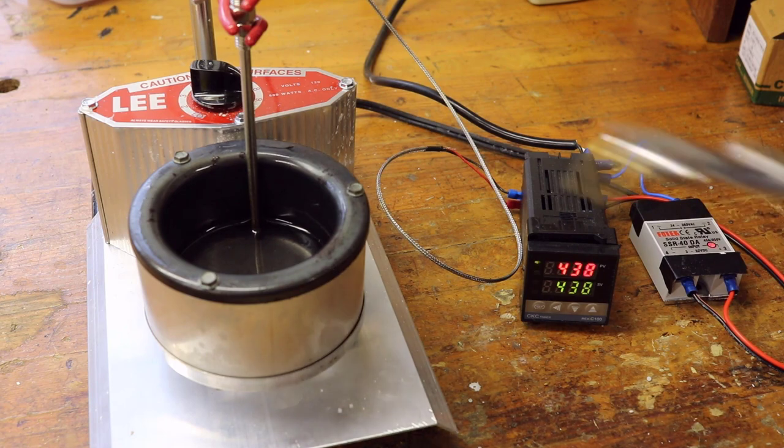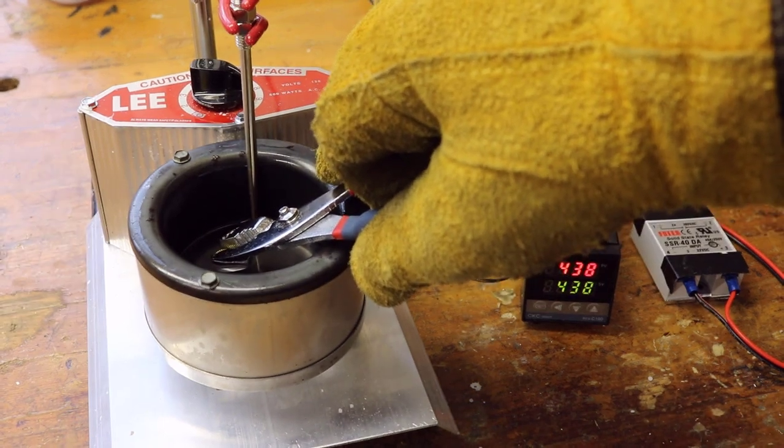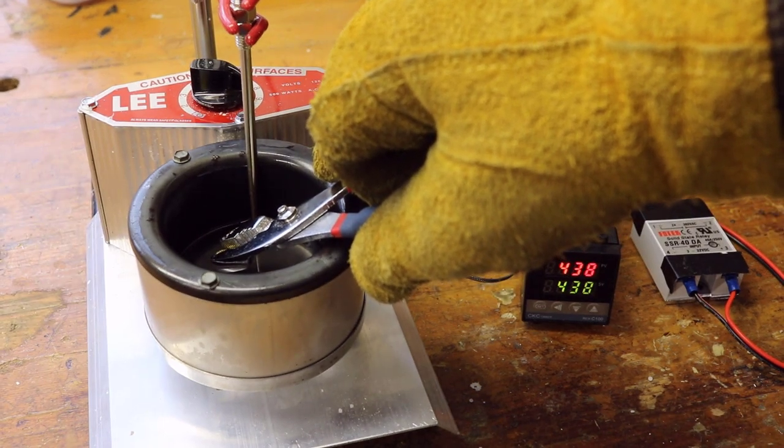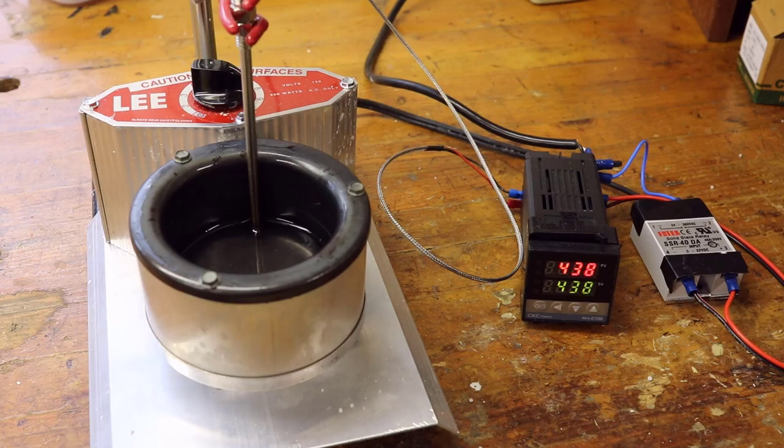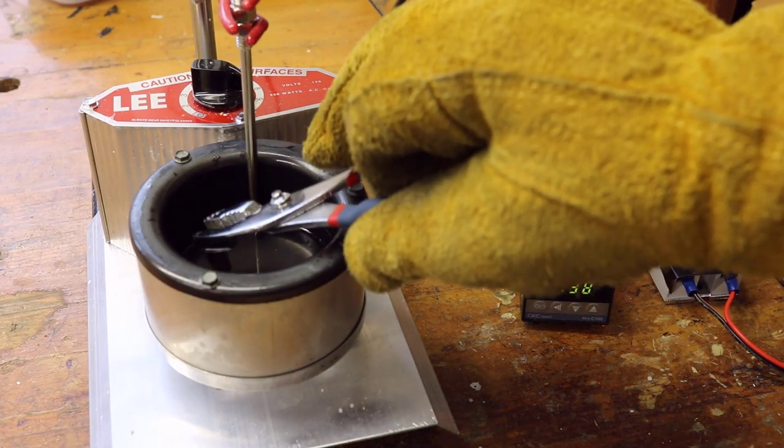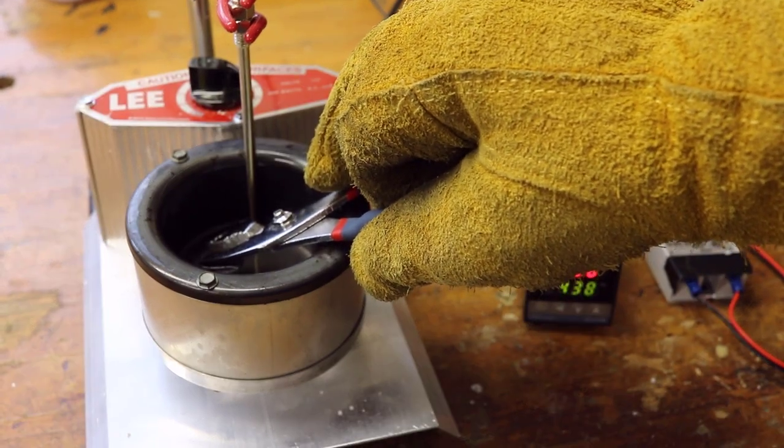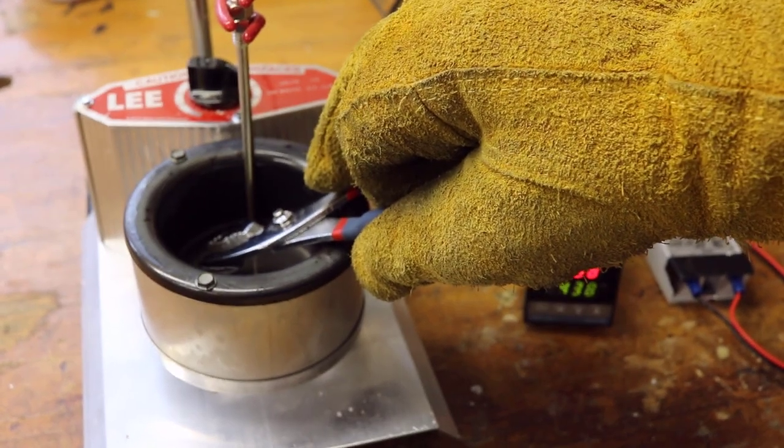I sectioned a rifle cartridge case and cut it into two halves, and took two pairs of pliers and cranked back and forth, bending it until it cracked. And it doesn't take very many flexes before brass cracks.